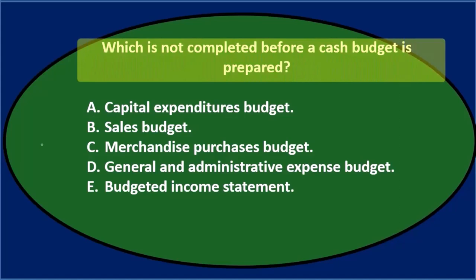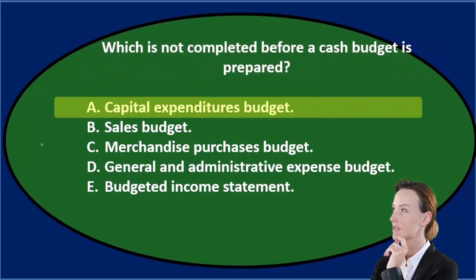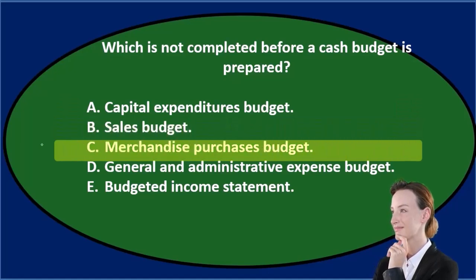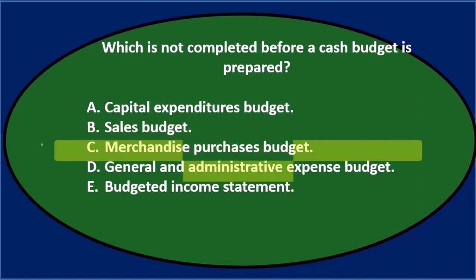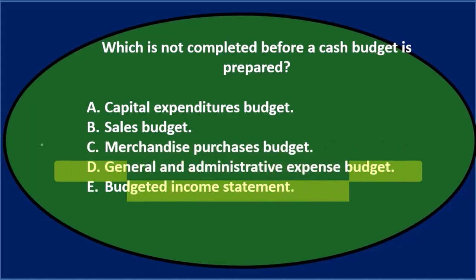Next question: which is not completed before a cash budget is prepared? A. A capital expenditures budget. B. Sales budget. C. Merchandise purchases budget. D. General and administrative expense budget. And E. Budgeted income statement.